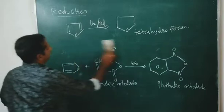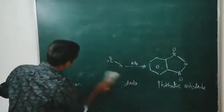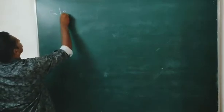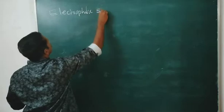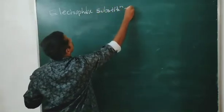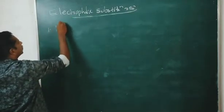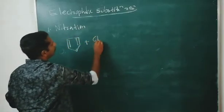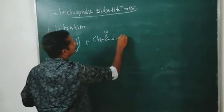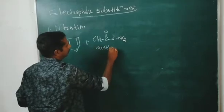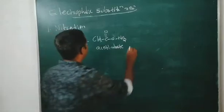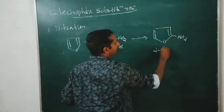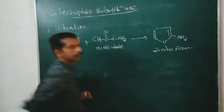Next: electrophilic substitution reactions of furan. First is nitration. When furan is treated with acetyl nitrate (CH3–CO–O–NO2), we get 2-nitrofuran — a nitro group introduced at the second position.